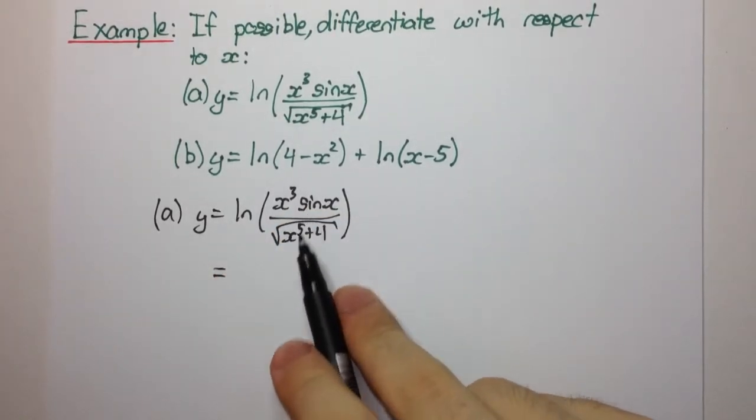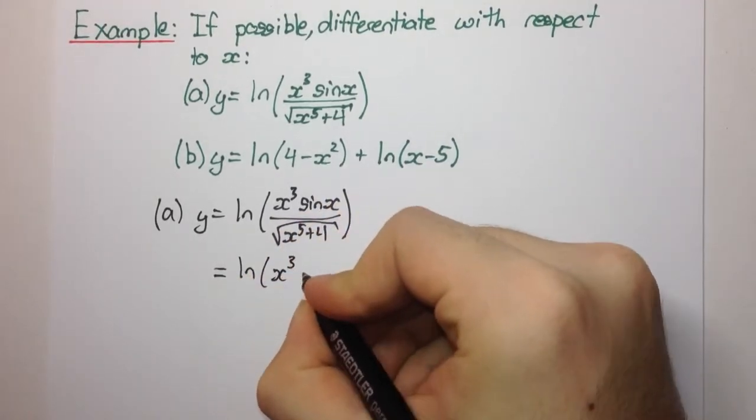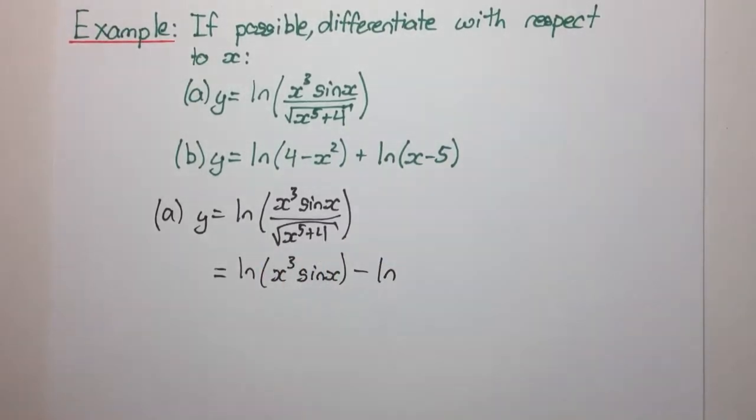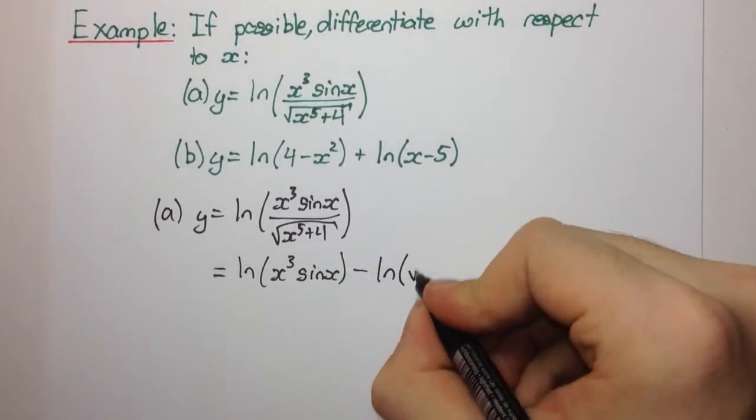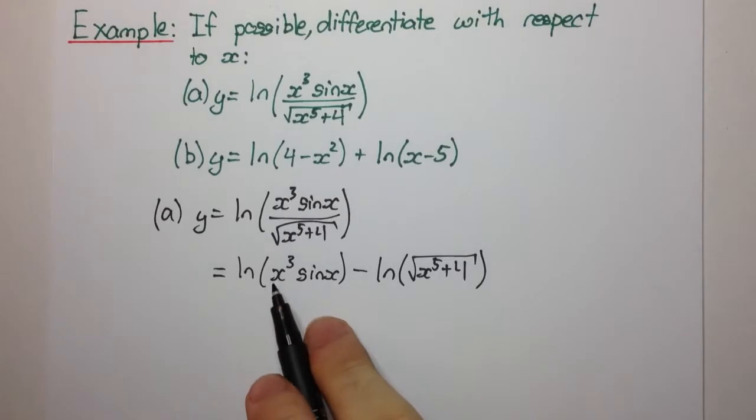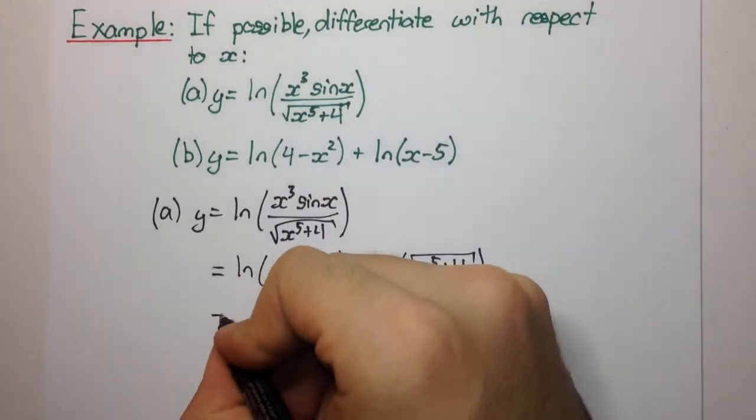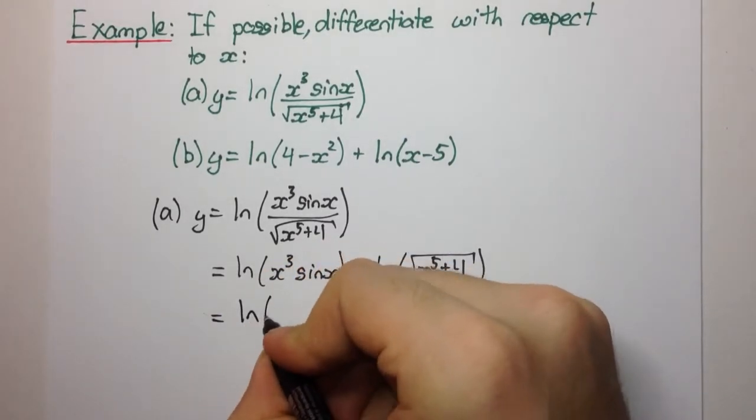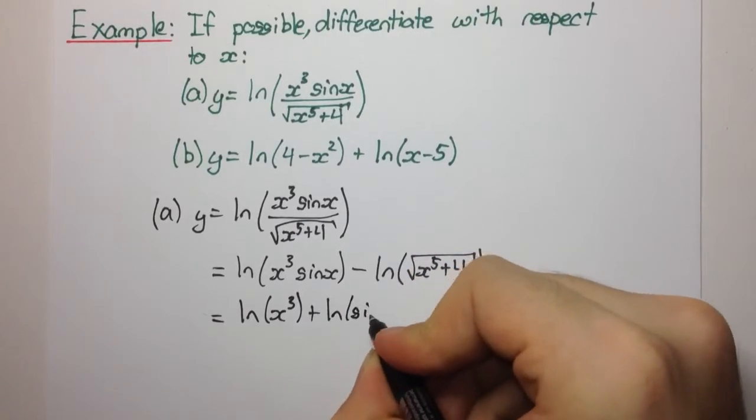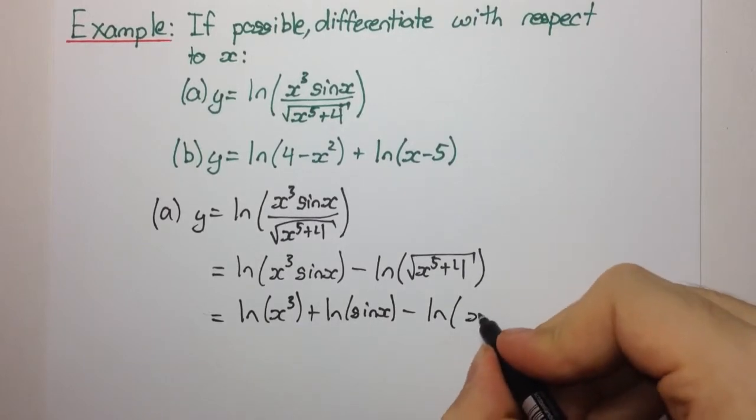So we know that when we have a quotient, we can break this up into a difference. So we get this minus log of what's on the bottom, x to the 5 plus 4. Okay, now here we have a product, and so we can break that up into a sum. So we have ln of x cubed plus ln of sin x minus ln of x to the 5 plus 4.